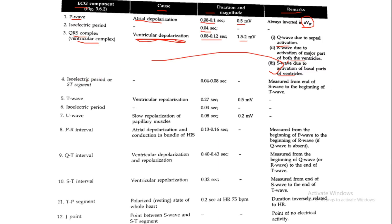The isoelectric period or ST segment has a normal duration of 0.04 to 0.08 second, measured from the end of the S wave to the beginning of the T wave. The T wave represents ventricular repolarization, with a duration of 0.27 second and a magnitude of around 0.5 millivolt.